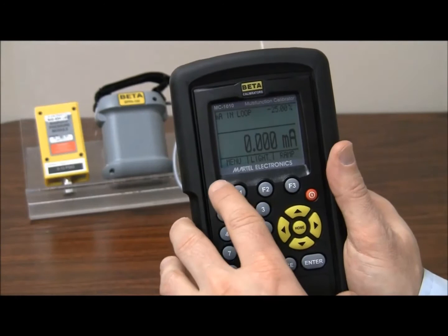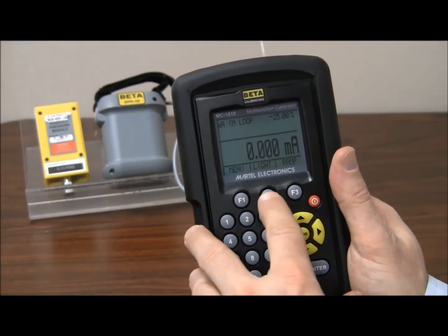On the screen main menu, you see menu, light, and ramp for F1, F2, and F3. To add the module, we're just going to hit menu.